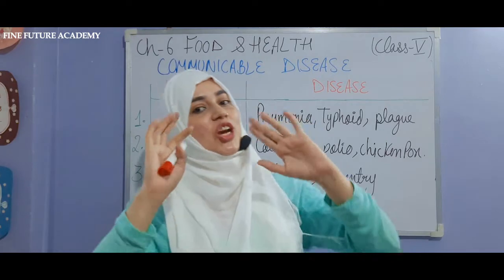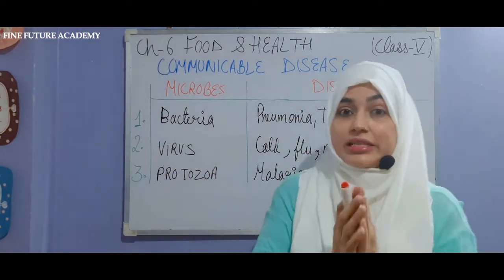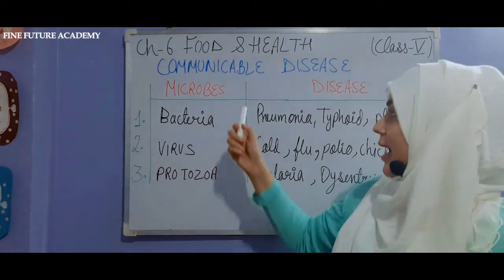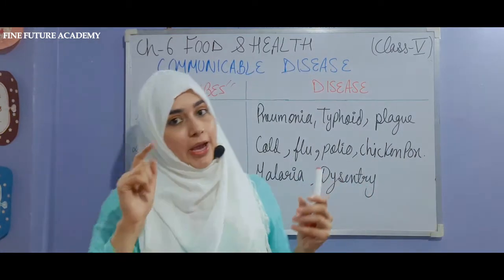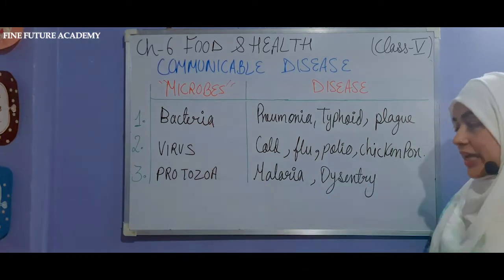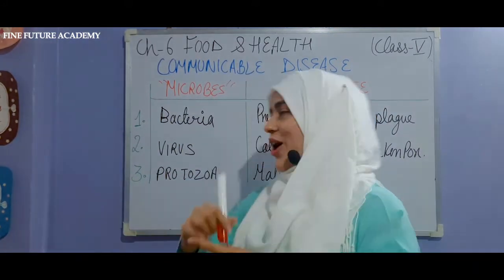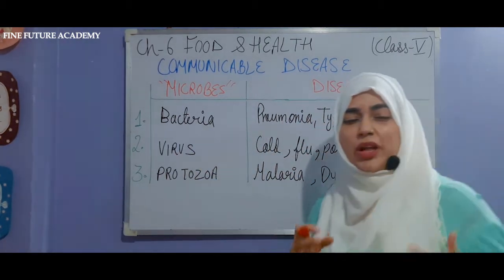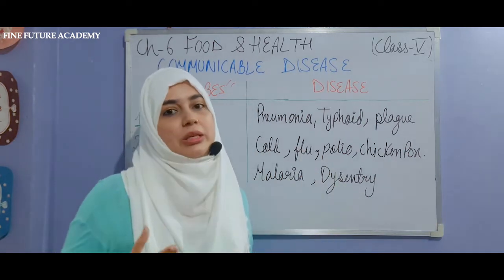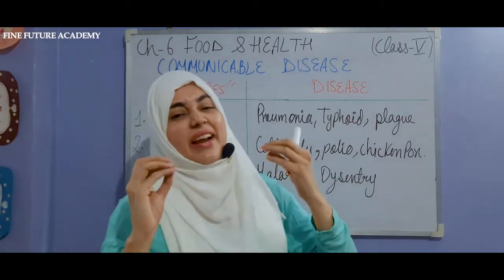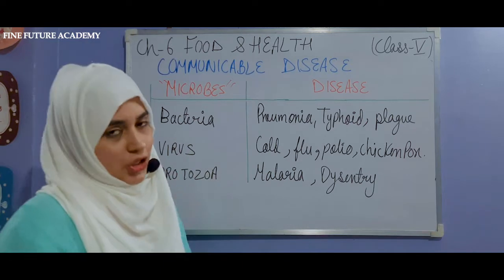Microorganisms spread diseases from one person to another. There are 3 types of microbes which can cause severe diseases. First, bacteria — these are germs you can only see with a microscope. Bacteria are present in dirty food or open food. Diseases caused by bacteria include pneumonia, which gives children fever and cold, and typhoid, which is caused by dirty water where bacteria are growing.